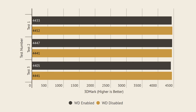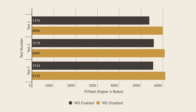Let's start with the two synthetic benchmarks. 3DMark saw less than a 1% performance increase after disabling Windows Defender — not the best news for you gamers. However, PCMark, which is a very general all-around performance benchmark, saw over a 9% performance increase, which is definitely an improvement. The question is, does this carry over to actual usage on your computer?